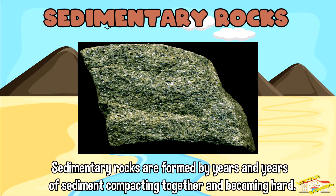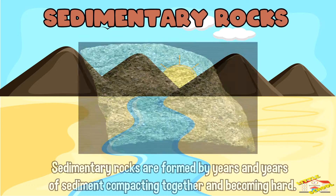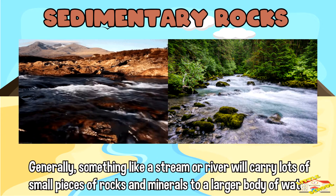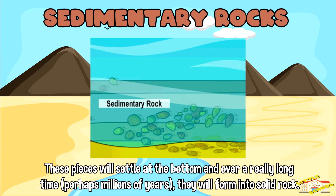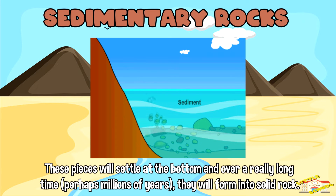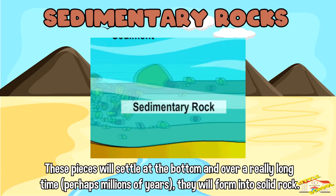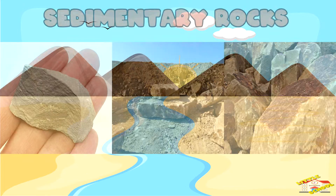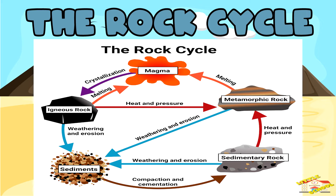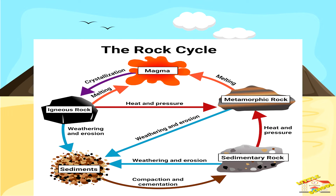Sedimentary rocks are formed by years and years of sediment compacting together and becoming hard. Generally, something like a stream or river will carry lots of small pieces of rocks and minerals to a larger body of water. These pieces will settle at the bottom, and over a really long time — perhaps millions of years — they will form into solid rock. Some examples of sedimentary rock are shale, limestone, and sandstone.